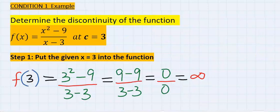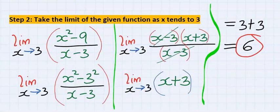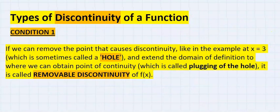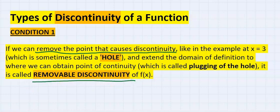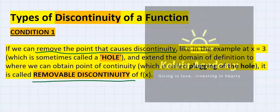However, initially, we got undefined, but we removed the point of discontinuity and we obtained an answer, which is 6. In conclusion for condition one, to remove a point of discontinuity, it is called removable discontinuity, which we saw in the example.